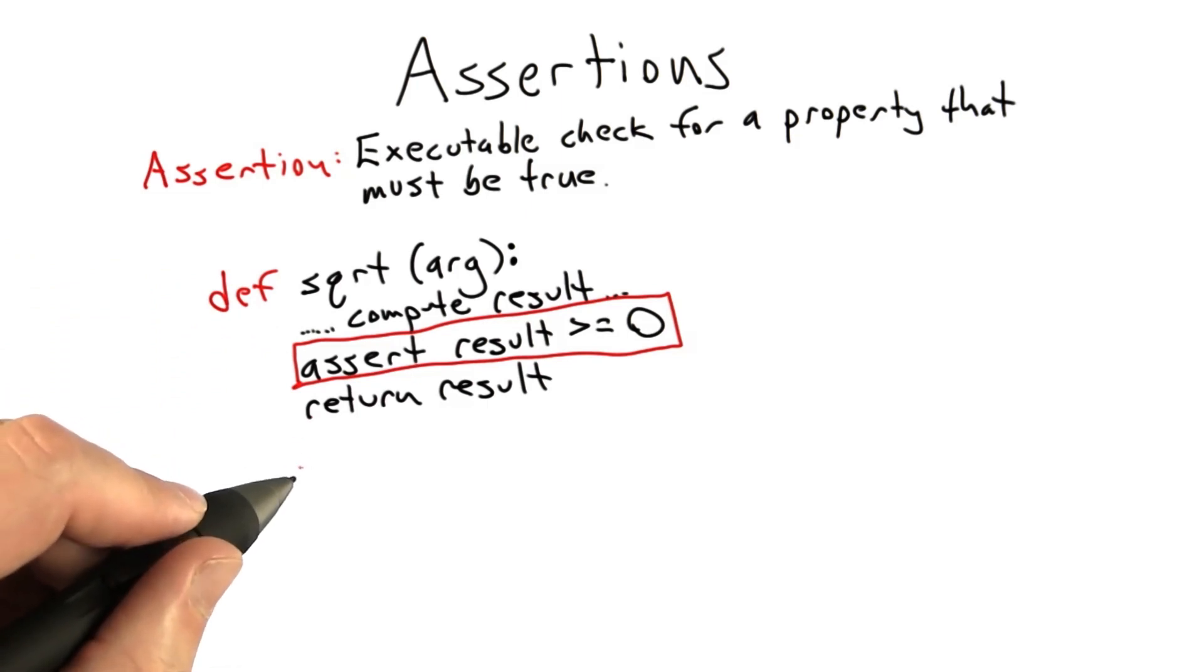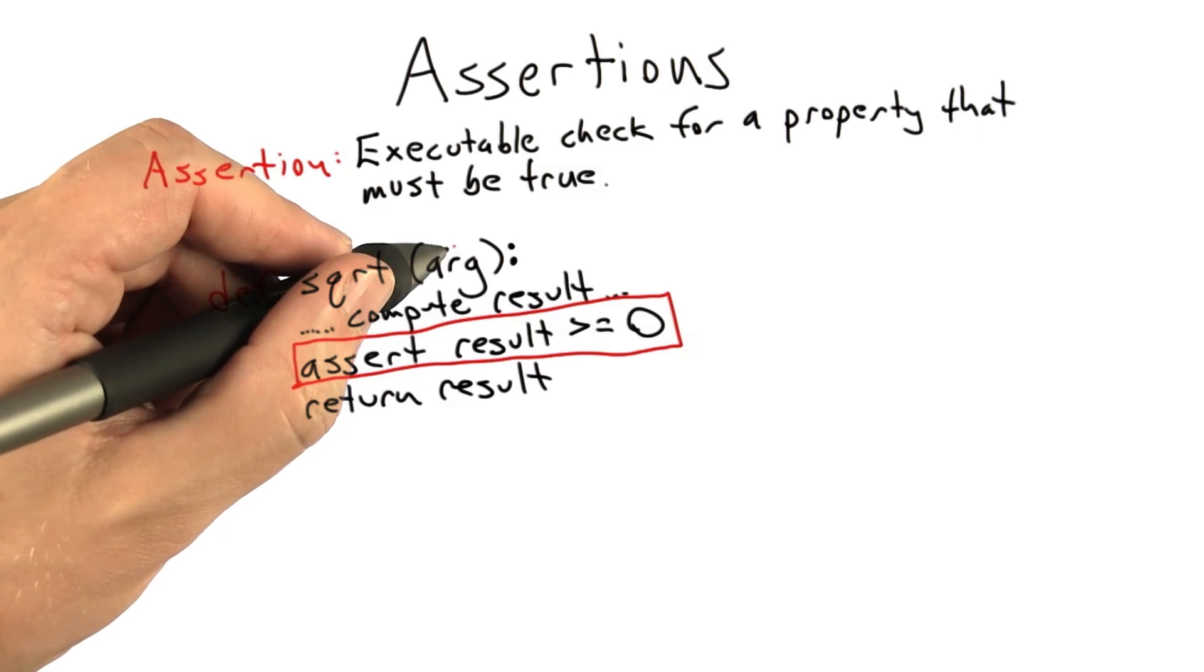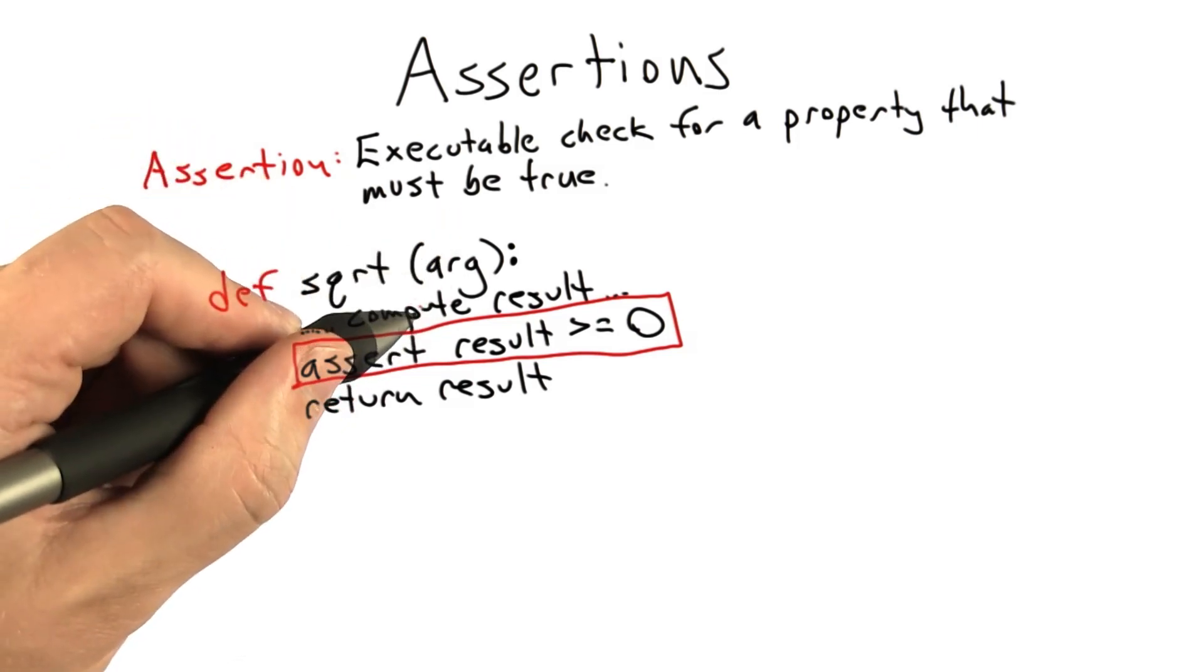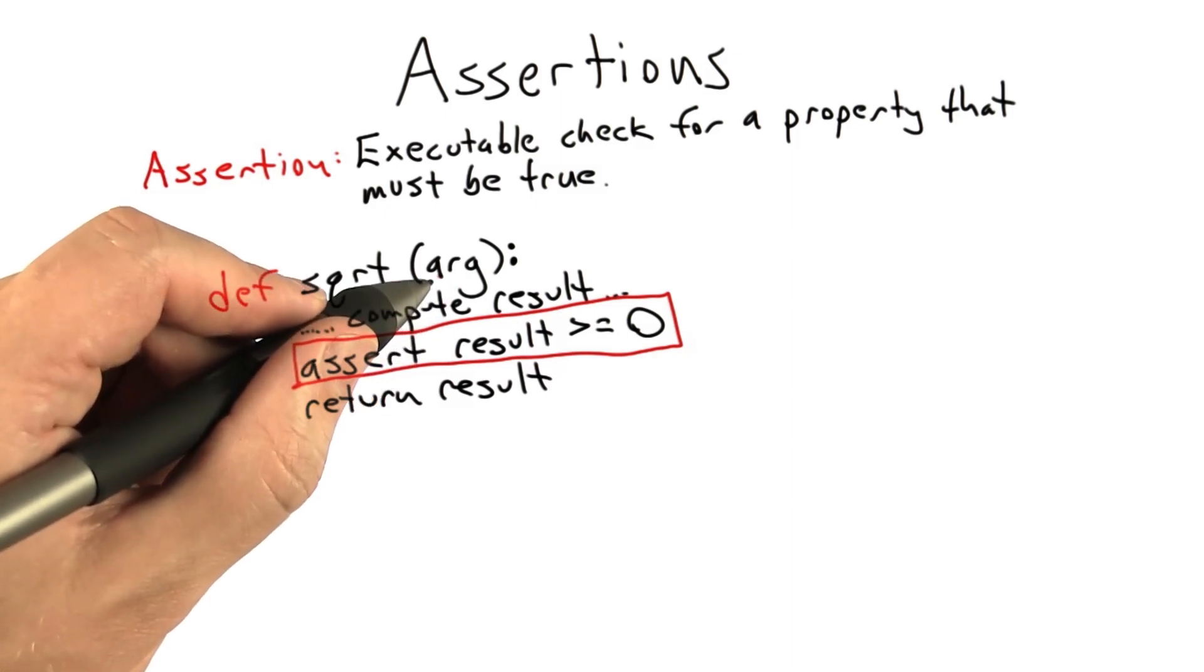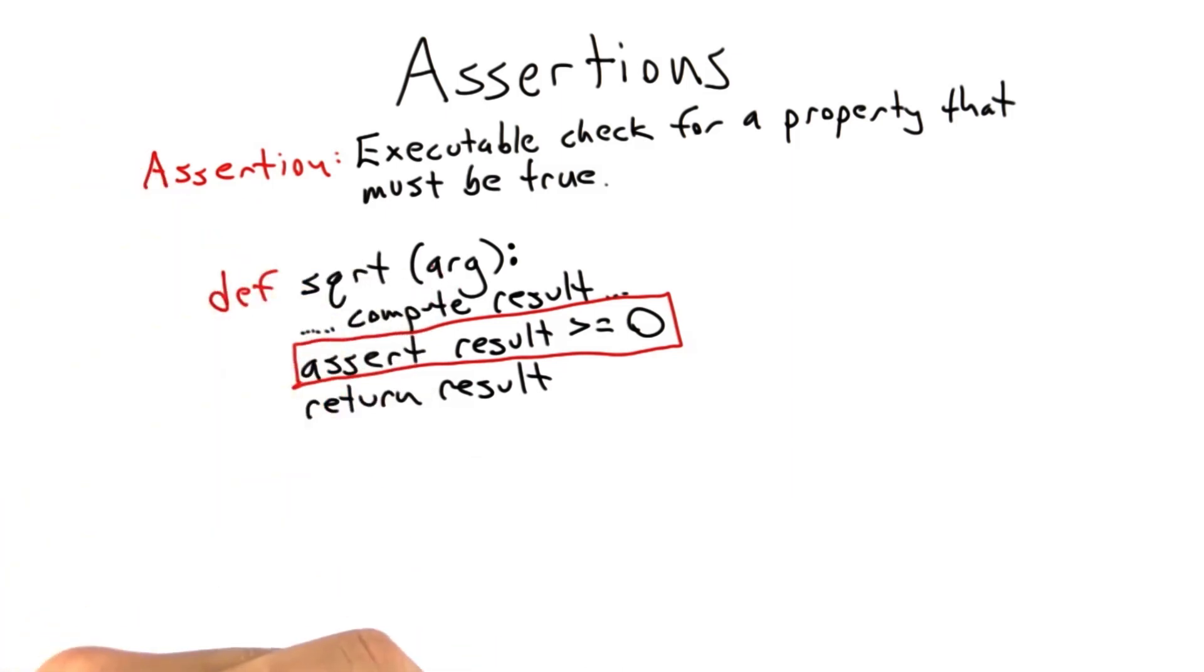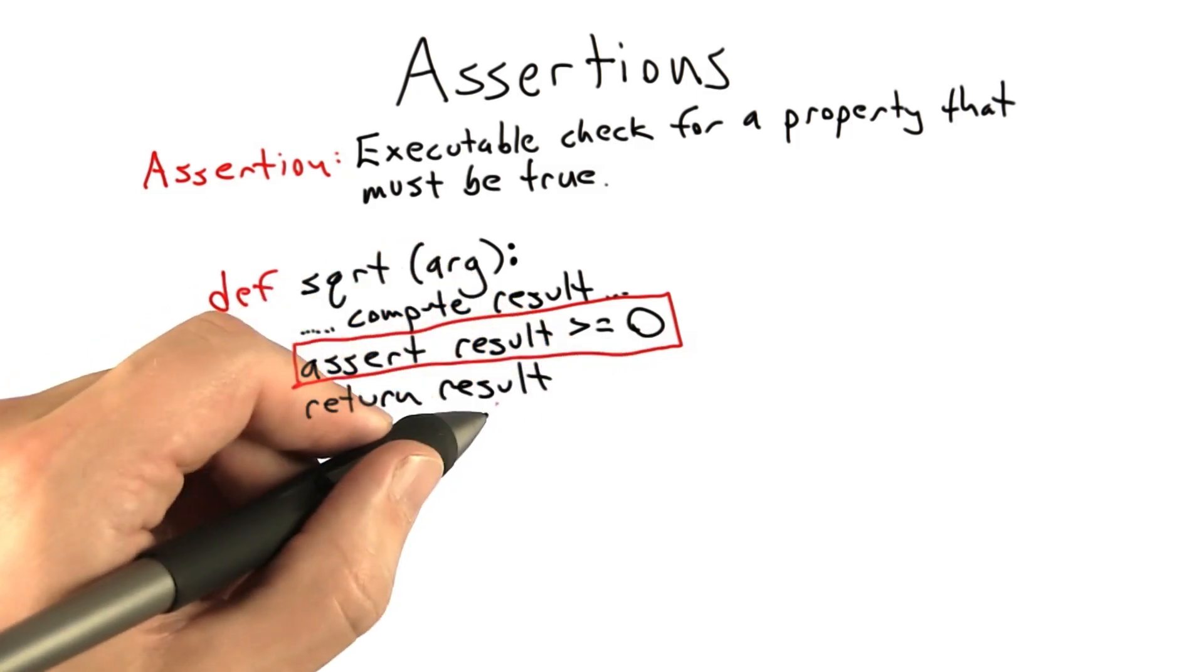So let's return to the square root example we've been using. Here we're going to define a Python function called square root, which takes an argument. There's going to be some code at the top which computes the result. Now what we're going to assume is that if the argument to the square root was negative, this bailed out with some sort of exception. So if we reach this line in the code, then we've successfully computed a square root result. And what we're going to do is assert that that result is greater than or equal to 0, and then return it.